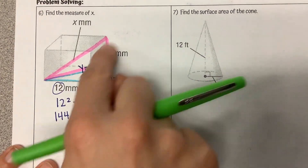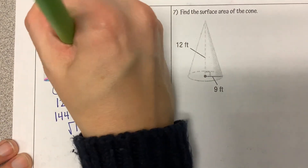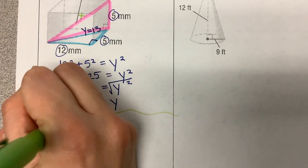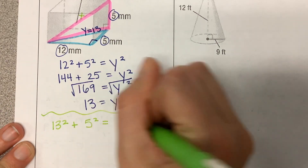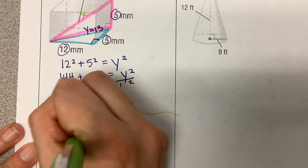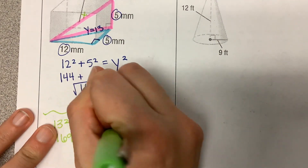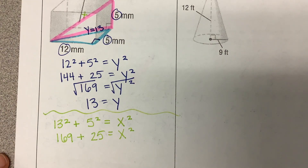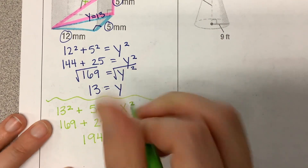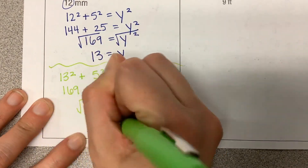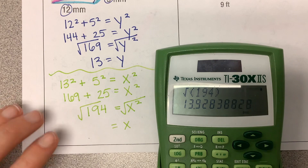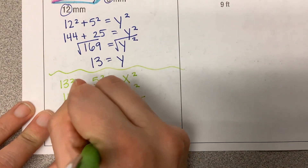Now I have two side lengths to be able to solve for X. I've got my two legs and my hypotenuse: 13 squared plus 5 squared equals our unknown X squared. 13 squared is 169 plus 5 squared is 25 is equal to X squared. 169 plus 25 is 194, which is equal to X squared. Last step — we take the square root of X. The square root of 194 gives us a long decimal that I'm going to round to 13.9, and we were talking about millimeters.